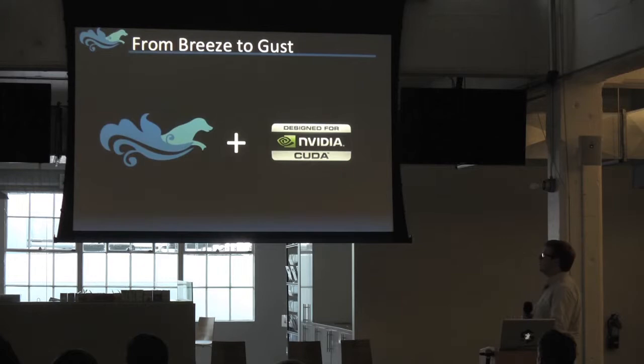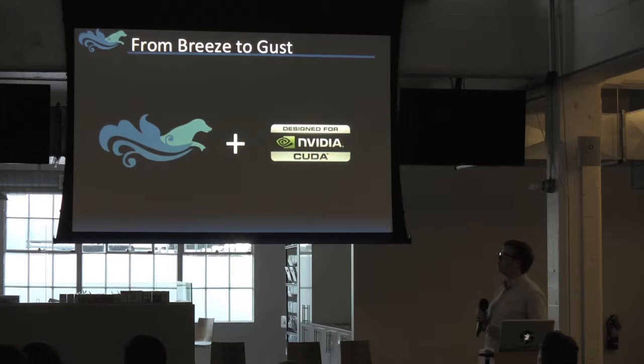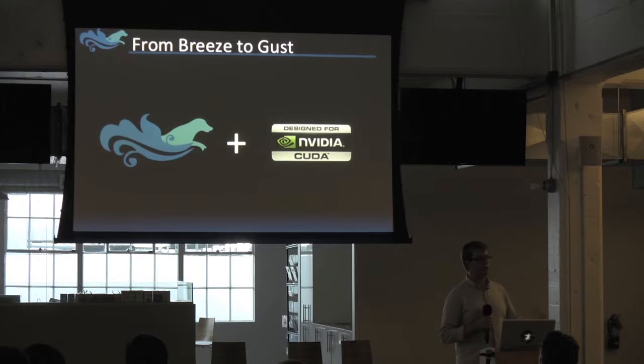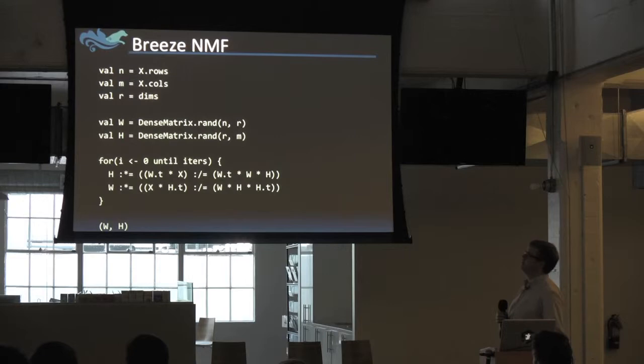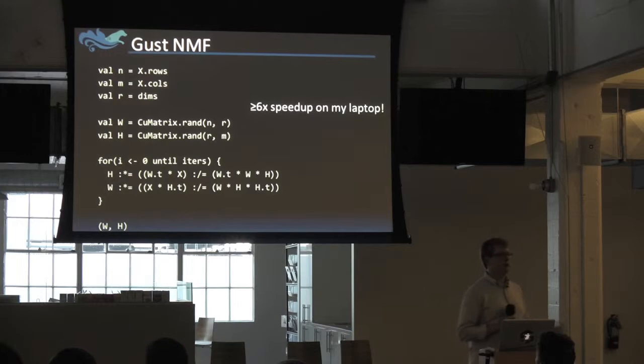Another great thing is a library called Gust, a GPU-accelerated version of Breeze that runs on NVIDIA hardware. The non-negative matrix factorization wasn't quite fast enough in Breeze, so we wanted to port it to the GPU. Here's how we had to change it to turn it into a GPU algorithm — even on a very small amount of data on my laptop it was six times faster. On a desktop it's closer to 50 or 100 times faster.